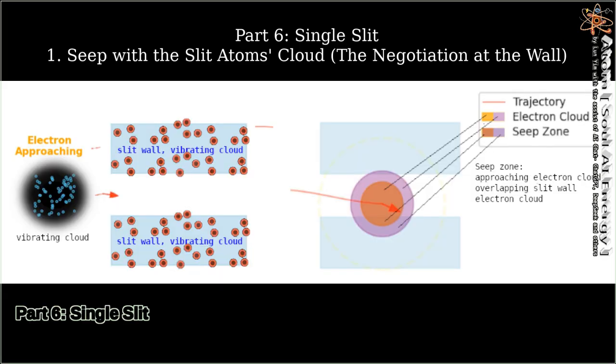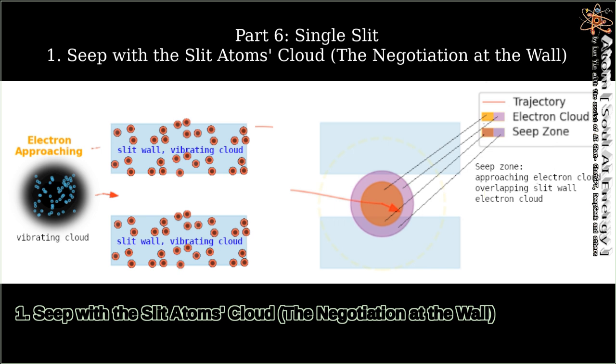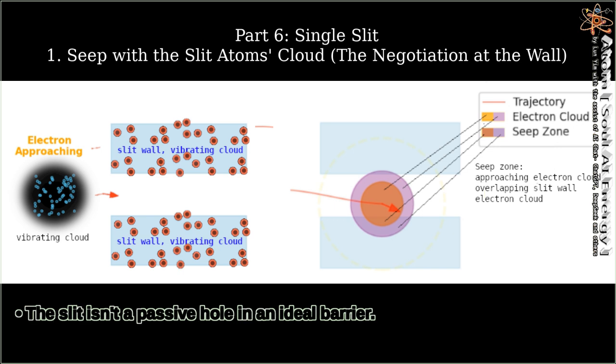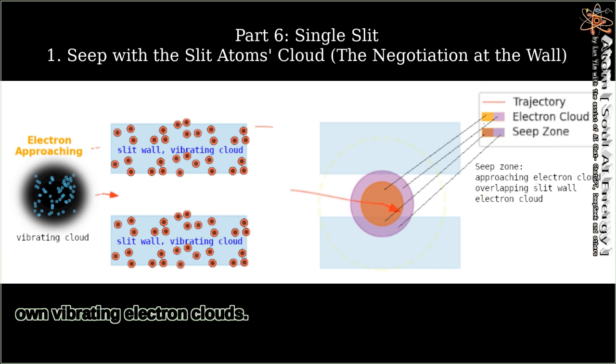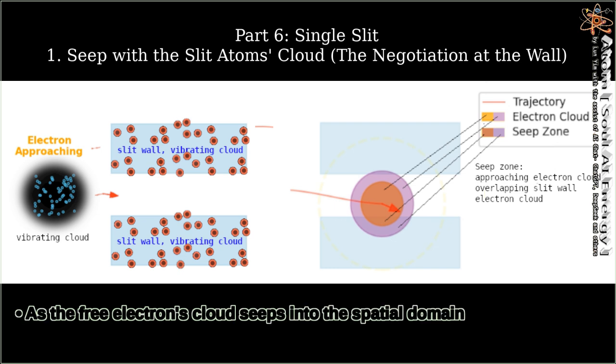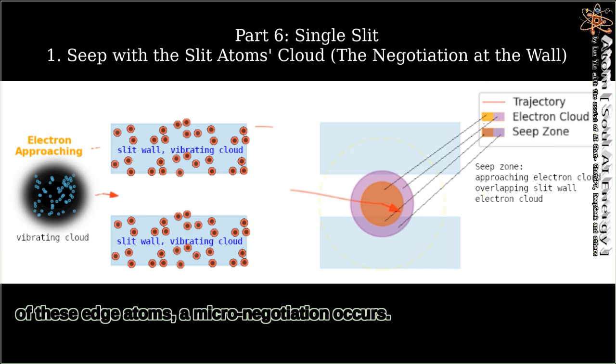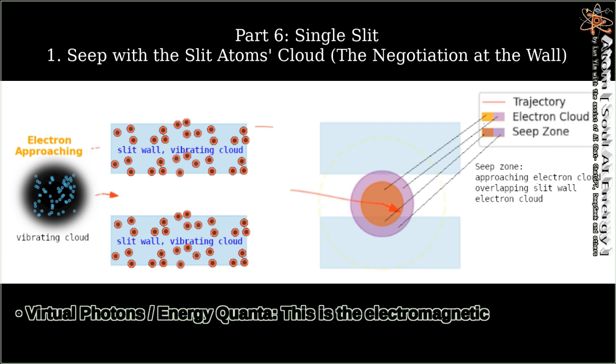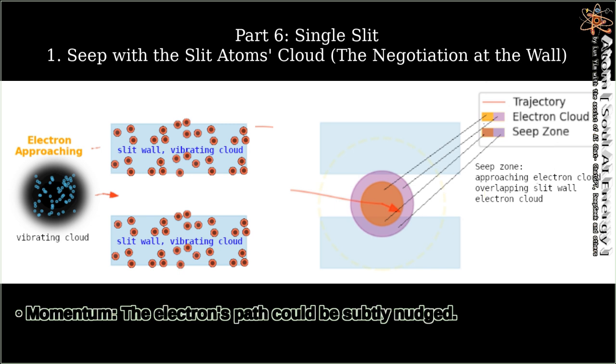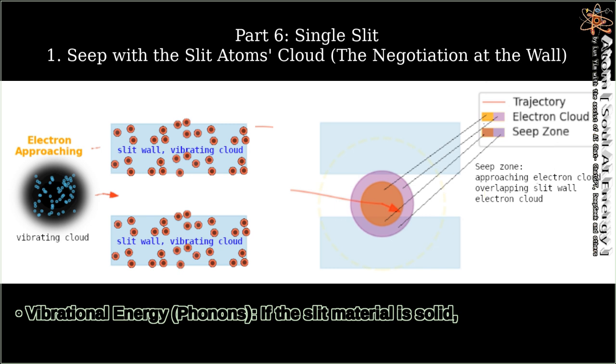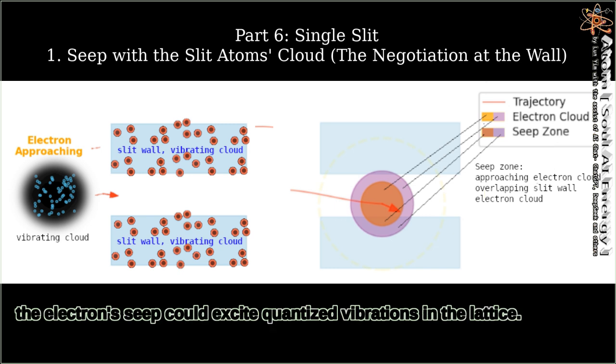Part 6: Single Slit. 1. Seep with the slit atom's cloud—the negotiation at the wall. The slit isn't a passive hole in an ideal barrier. It's a constellation of atoms, e.g., in a metal, with vibrating electron clouds. As the free electron's cloud seeps into the spatial domain of these edge atoms, a micro-negotiation occurs. What's exchanged? Virtual photons/energy quanta—this is the electromagnetic interaction. The edge atom's cloud may be temporarily polarized. Momentum—the electron's path could be subtly nudged. Vibrational energy (phonons). If the slit material is solid, the electron's seep could excite quantized vibrations in the lattice.